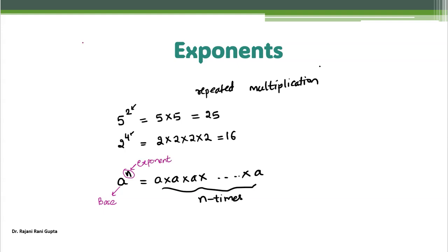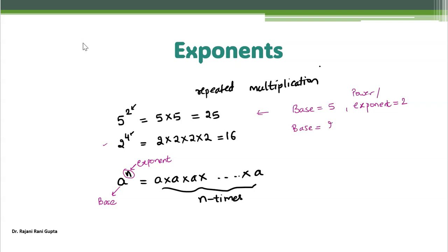Here we call 'a' as the base and 'n' as the exponent. So in the case of 5 power 2, the base is 5 and the exponent is 2 — you can say it is exponent or power. In the second example, the base is 2 and the power is 4.